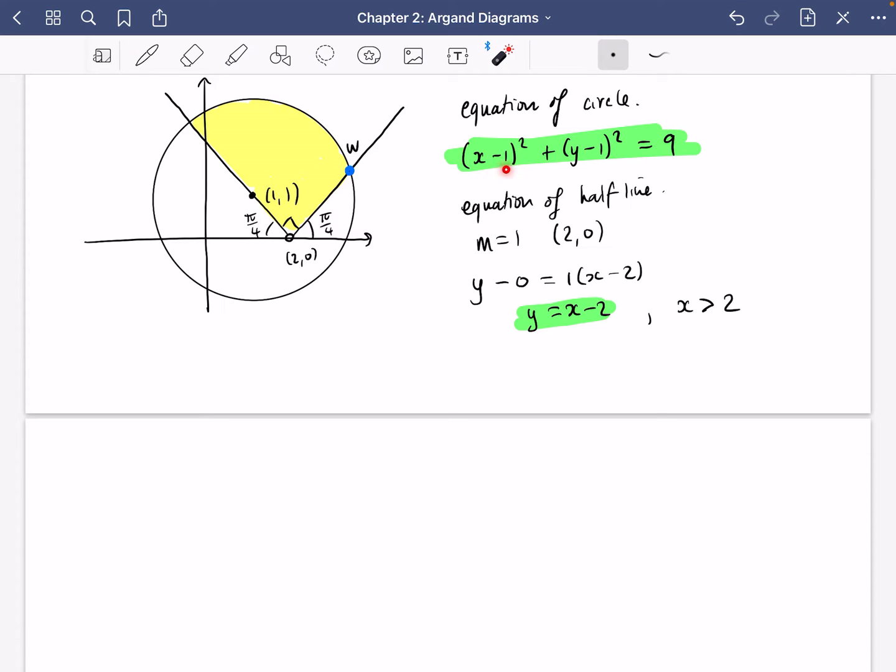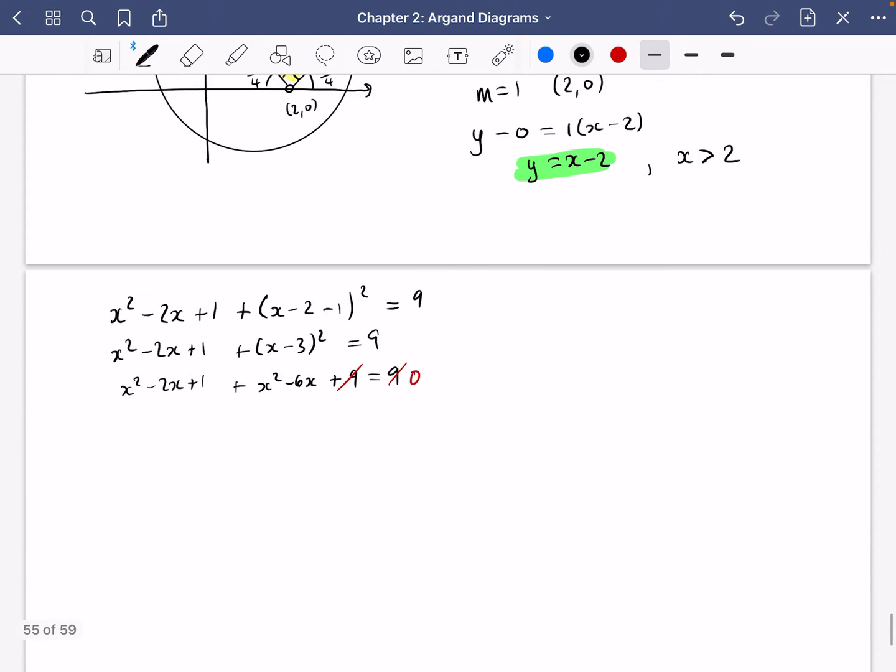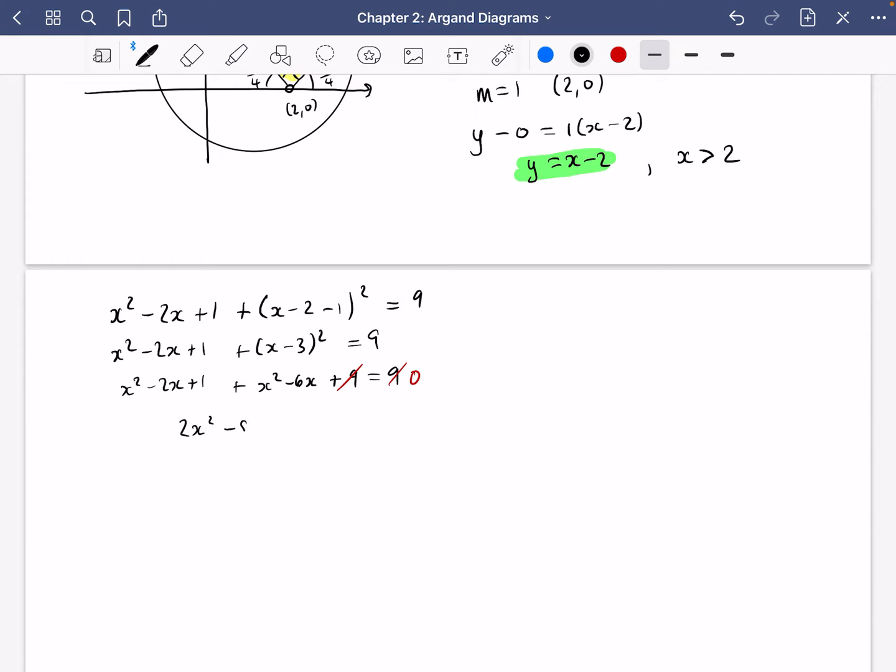So I'm going to start by expanding this bracket and I'm also going to sub in there. So that's going to be x squared minus 2x plus 1 plus, now this is y minus 1. So y is x minus 2, and we're going to subtract 1 from that and that all squared is equal to 9. So it's x squared minus 2x plus 1 plus x minus 3 squared equals 9. So we have x squared minus 2x plus 1 plus x squared minus 6x plus 9 equals 9. Now I can cancel the 9 here and here, so that gets left with a 0. And then I can do a little bit of simplifying so that I have 2x squared minus 8x plus 1 equals 0.